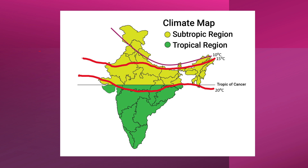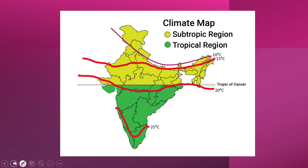To the south of this isotherm, the temperature always remains above 21 degrees centigrade and in the extreme south above 25 degrees centigrade. During this time we have a high pressure, and this high pressure is very prominent in the north-western part of the country.